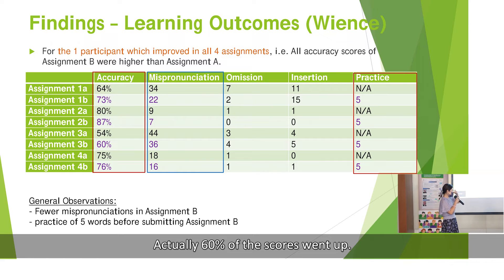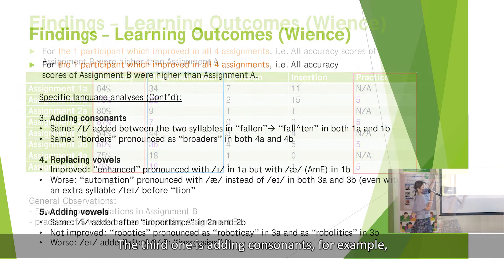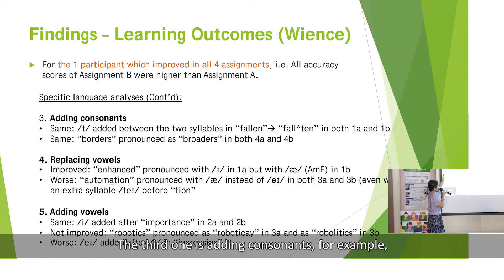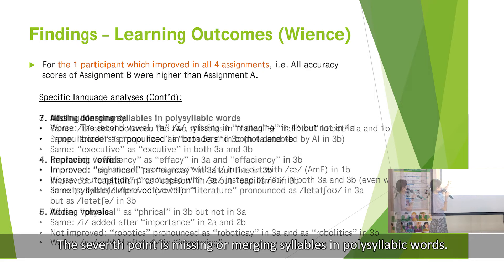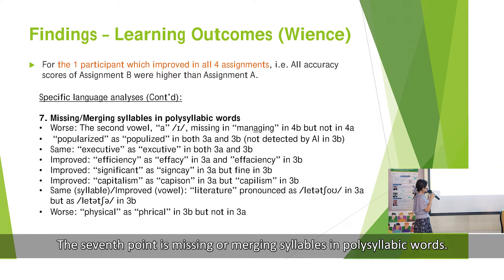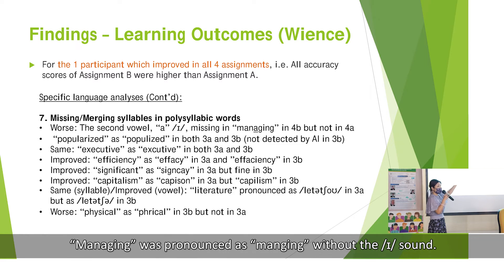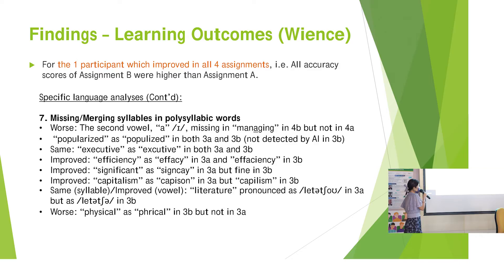You can find that actually 60% of the scores went up. The third issue is adding a consonant — for example, 'foreign' was pronounced as 'water', and 'mention' was pronounced without the 'sh' sound.